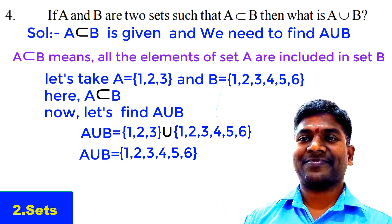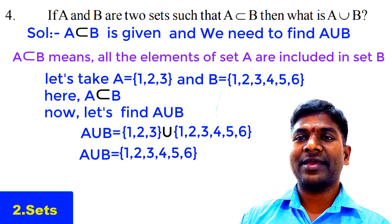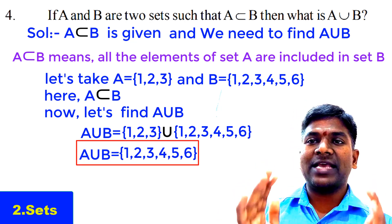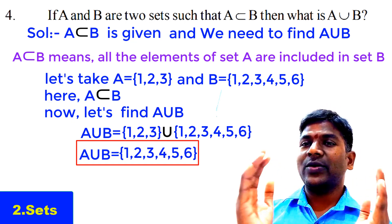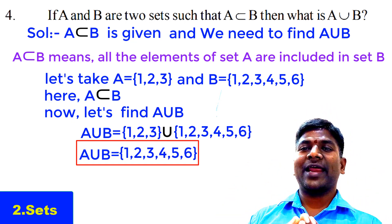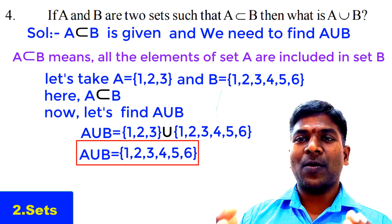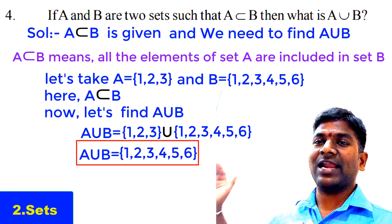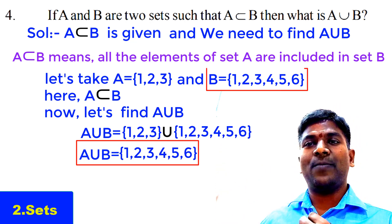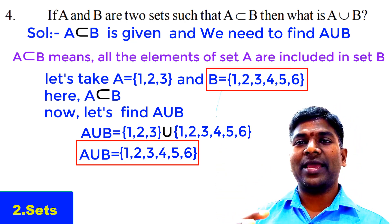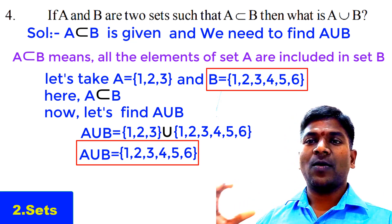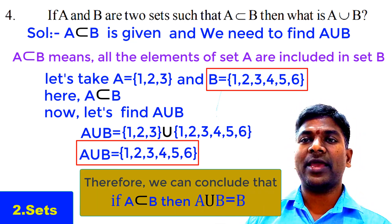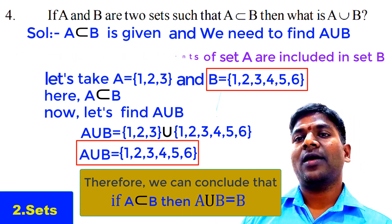What do you observe from A union B when A ⊆ B? A union B is again the set B itself — {1, 2, 3, 4, 5, 6} are the elements of Set B. So if A ⊆ B, then A union B = B.